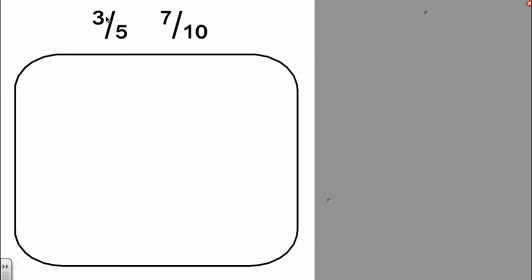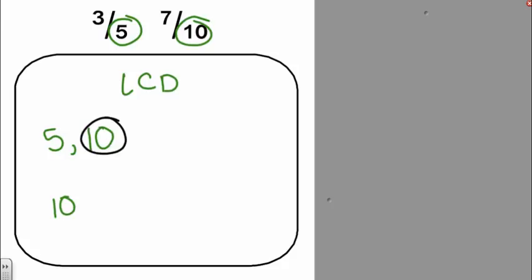Here's our last problem for today. We have 3 fifths and 7 tenths. I'm going to circle my denominators, and I'm going to go ahead and find the least common denominator, so by putting 5 and 10. When I start listing my multiples of 5, I'm going to realize right away that the thing that both of these numbers have in common, the multiple they both have in common is 10. That one was really quick and easy.